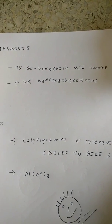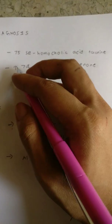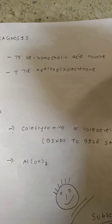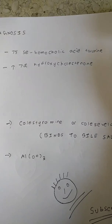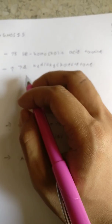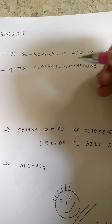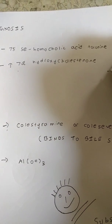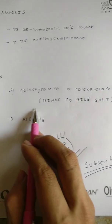We use two tests: the 75 selenium homocholic acid taurine where a radiolabeled selenium is used, although this is very expensive and not performed worldwide. There is also the increase of a marker, the 7-alpha hydroxycholestan, which is raised in this condition.